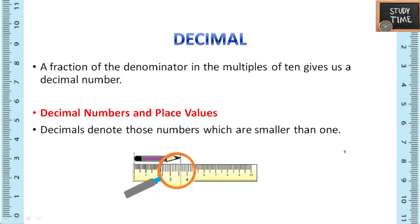Let us see what is decimal. A fraction of the denominator in the multiples of 10 gives us a decimal number. You know what is numerator and denominator. Numerator is the number which is on top of the fraction, the below number is called as denominator. When this denominator is multiples of 10, it can be 10, 100, 1000, in any multiples of 10, then that number is called as a decimal.